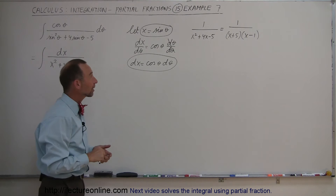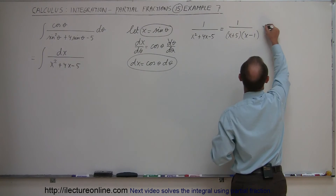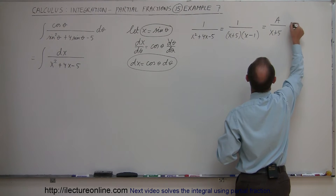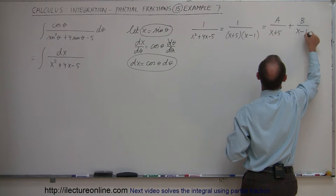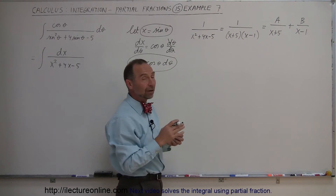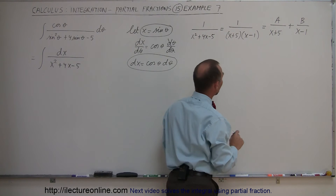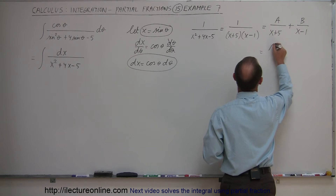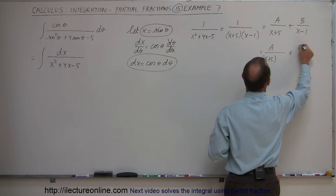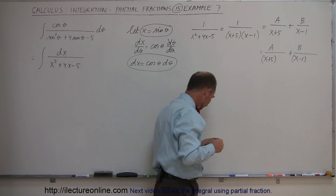So the proper factorization of the denominator is (x + 5)(x − 1), and we can now write the partial fractions decomposition as A over (x + 5) plus B over (x − 1). The technique is to multiply both fractions by whatever we need to make the denominators equal to what we have on the left side.